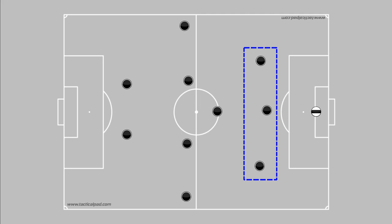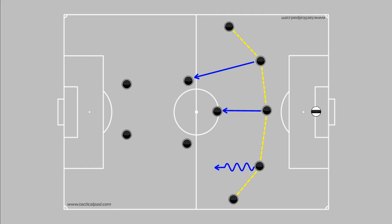Teams that operate with three central defenders are said to play with a back three. This three-player line of defense is traditionally flanked on either side by wingbacks, who are responsible for pushing forward in attack, but then recovering back to create a back line of five when their team is out of possession.